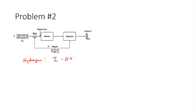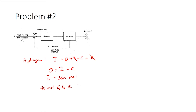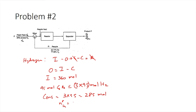Hydrogen balance: input − output − consumption = 0. Input = 360 moles. Since 95 moles of benzene are consumed, stoichiometry gives hydrogen consumed = 3 × 95 = 285 moles. Therefore hydrogen in the product = 360 − 285 = 75 moles.